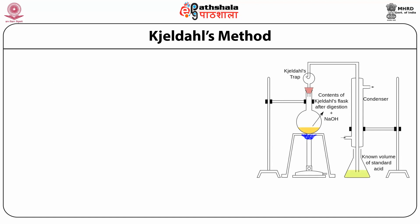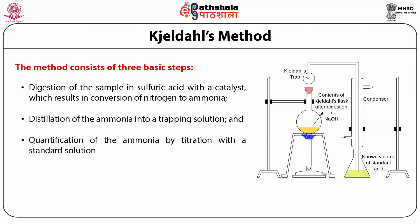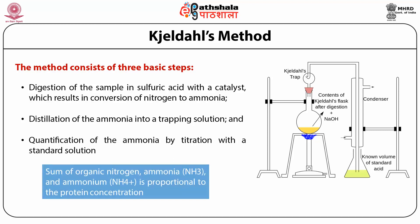We discuss the Kjeldahl method, which consists of three basic steps. The first step is digestion of the sample in sulfuric acid with a catalyst, resulting in conversion of nitrogen to ammonia. The second step is distillation of ammonia into a trapping solution. The third step is quantification of ammonia by titration with a standard solution. The sum of organic nitrogen, ammonia, and ammonium is proportional to the protein concentration. The Kjeldahl flask is shown here — the protein solution is boiled, nitrogen is trapped in solution, and nitrogen is then estimated.